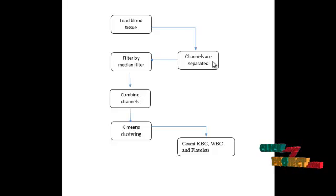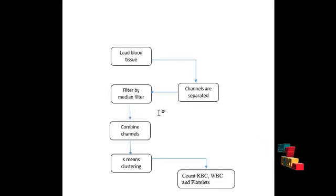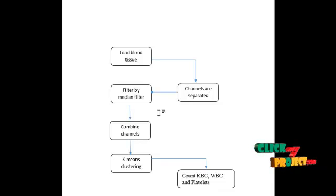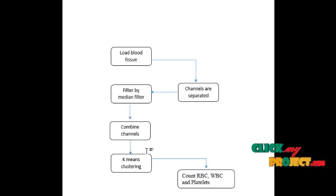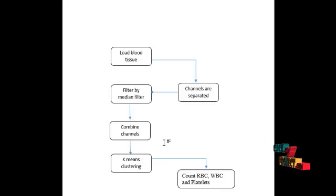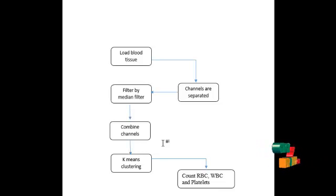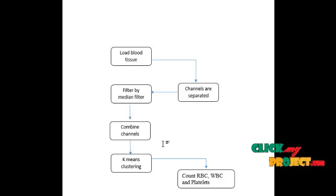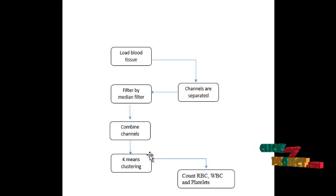After that, we combine all the channels together to get the RGB image. After the pre-processing combination process, we perform K-Means clustering. K-Means clustering is used for segmentation. We set the cluster value to four, and the centroid values convert the given blood cell image into four types of clusters.